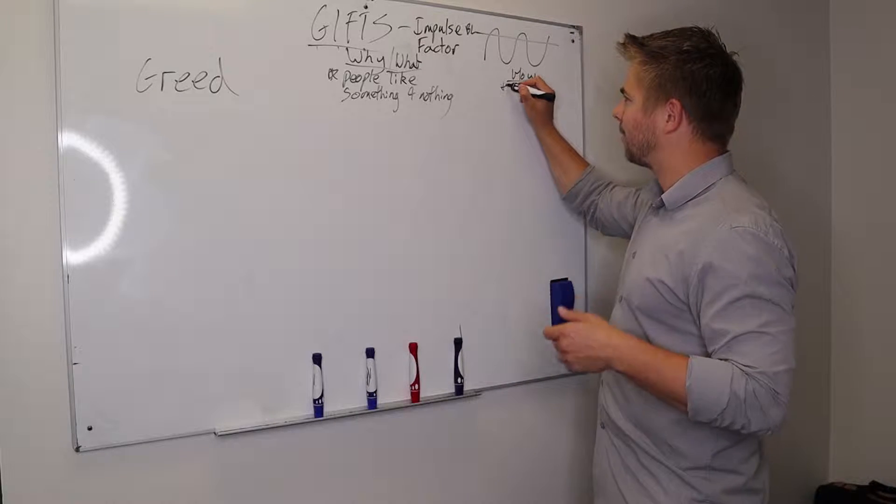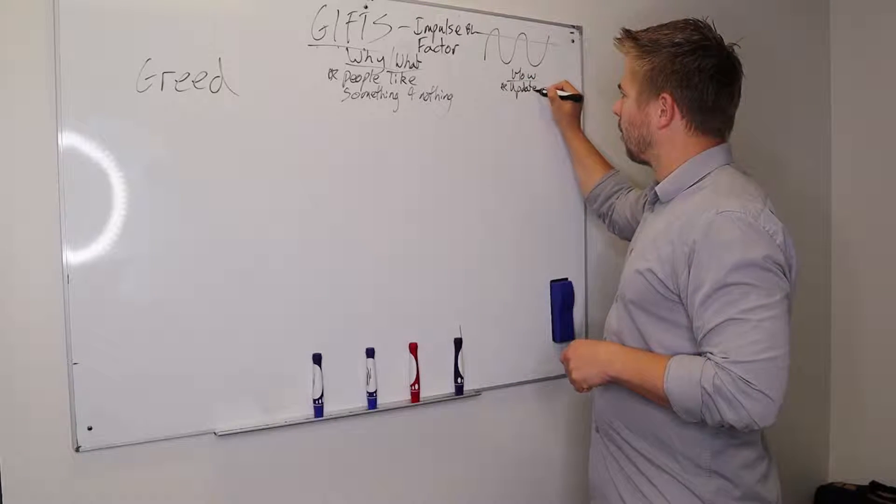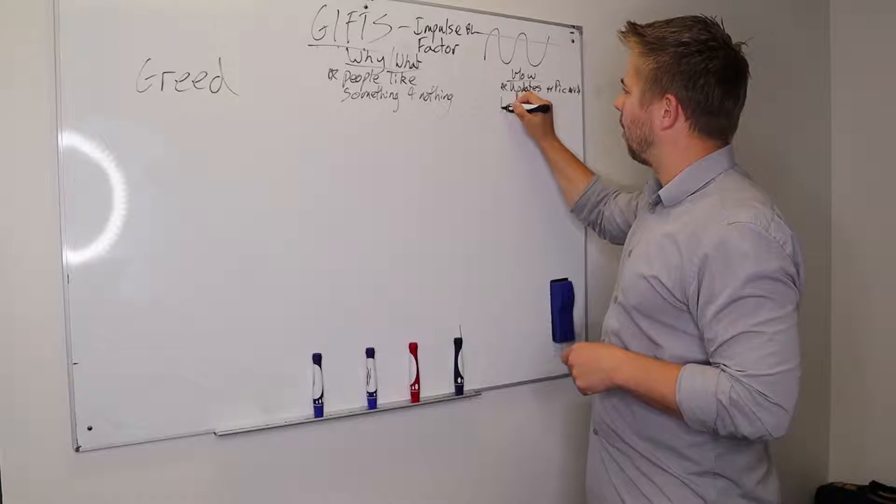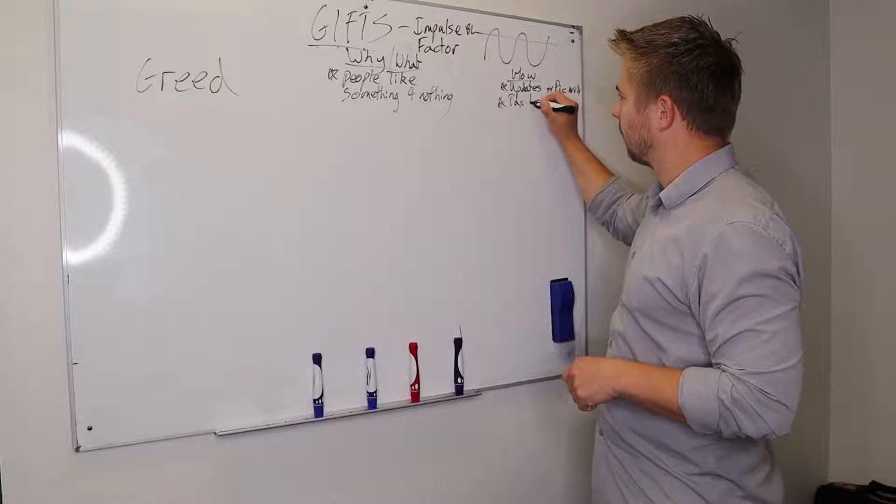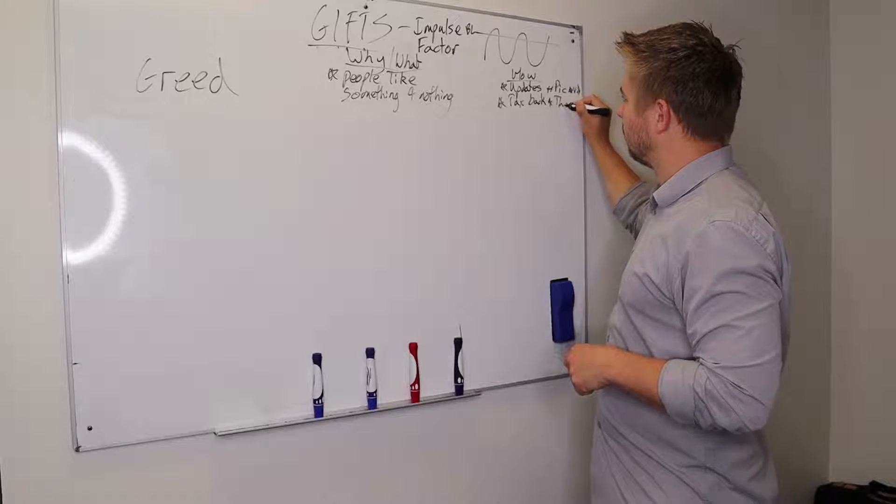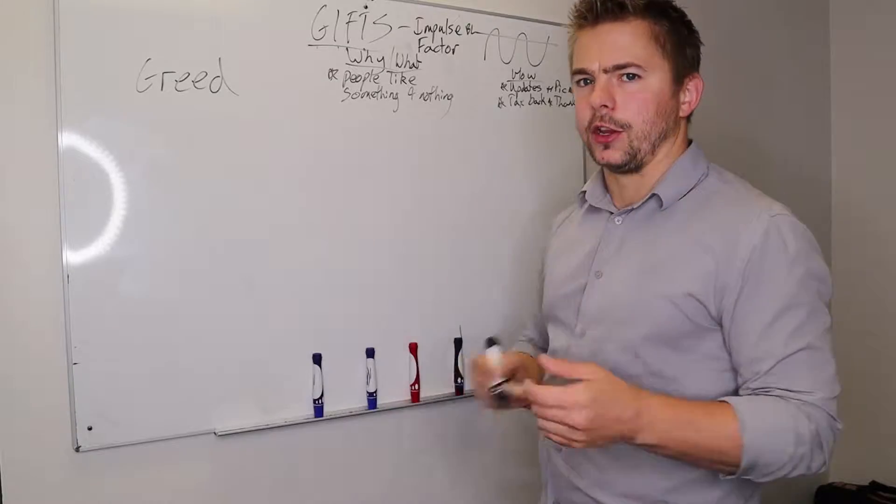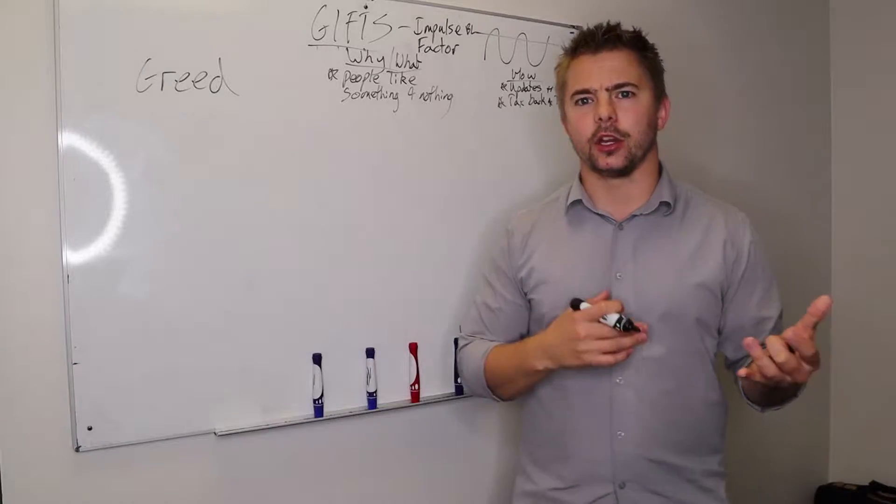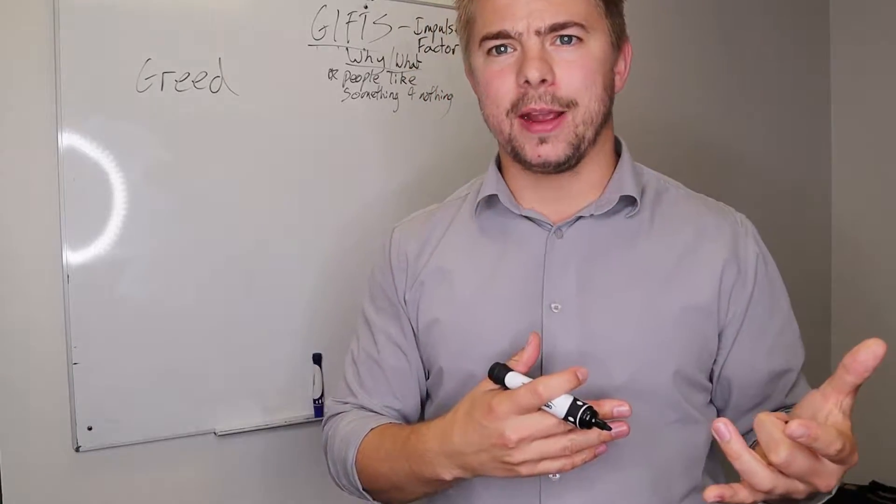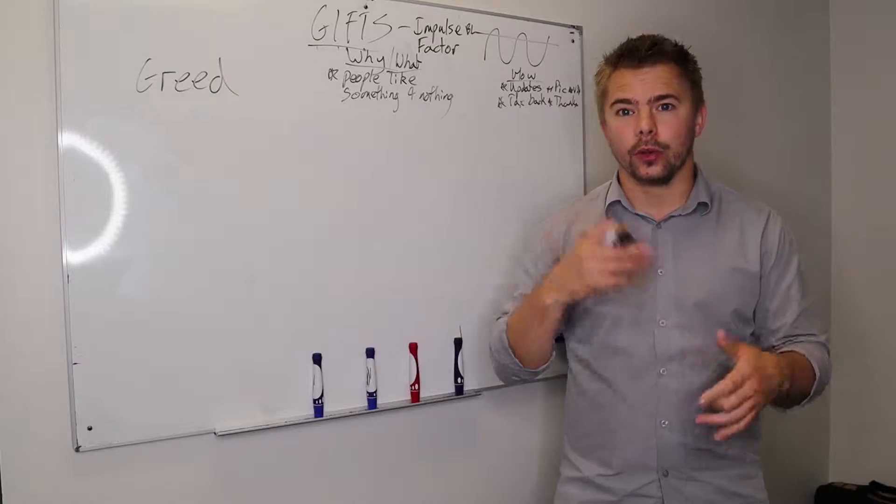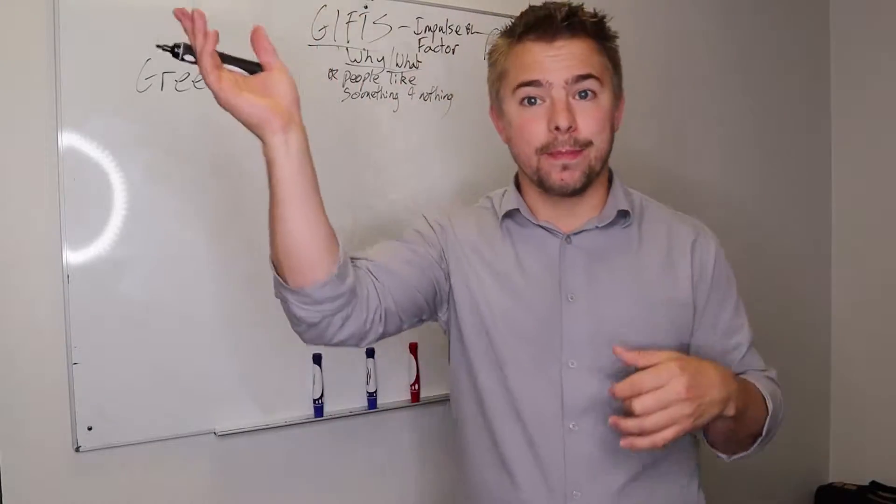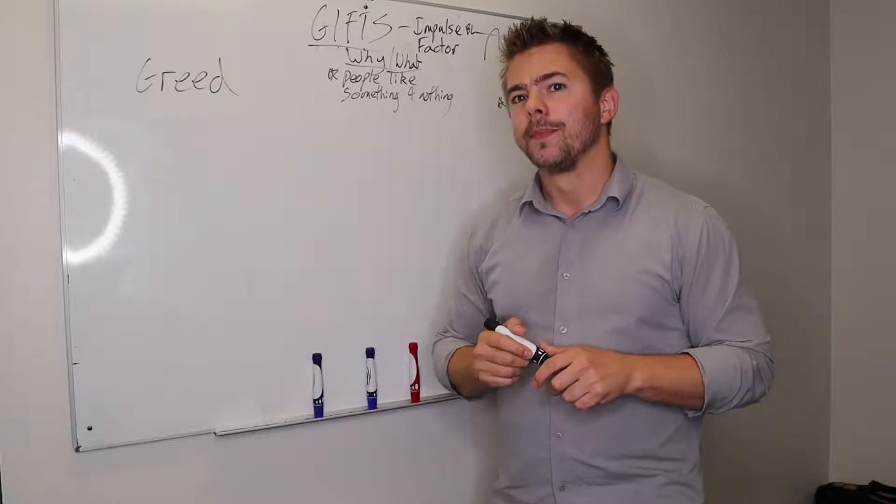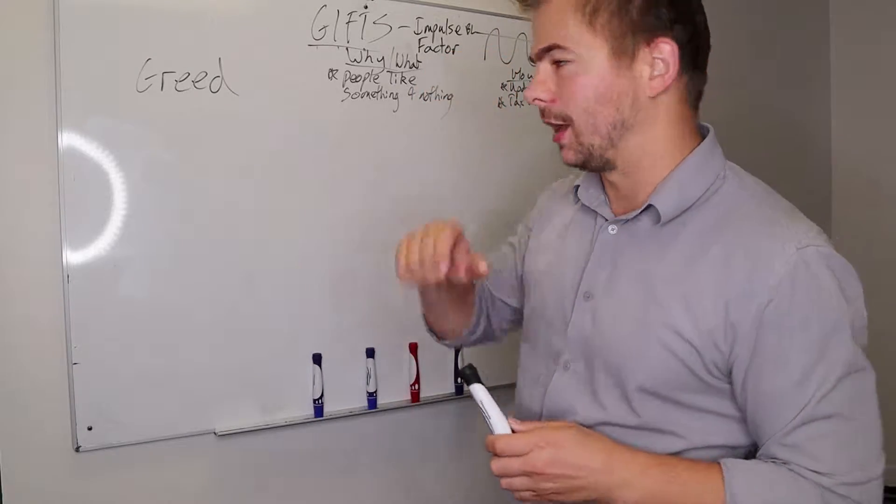For example, in our presentation, we've got stuff like updates, pictures, videos, tax back, thank you booklets, starter packs. We've got loads of stuff that we can use. But if we look in any type of sales, it's stuff like two for one - they're going to get extra for what they're actually paying for. Fifty percent off, 20% more. You're having all of these extra greed. It's that people want to get something for nothing. And that's a massive impulse factor that obviously drives people.